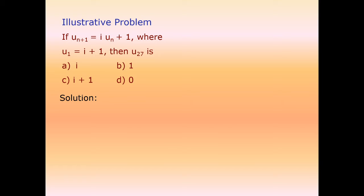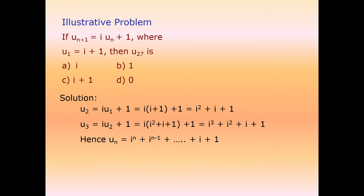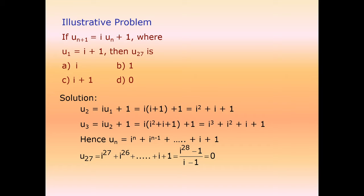For another problem, calculating the sum of iota^27 and similar terms, since it becomes a finite geometric progression (GP), we apply the GP formula to calculate it efficiently.